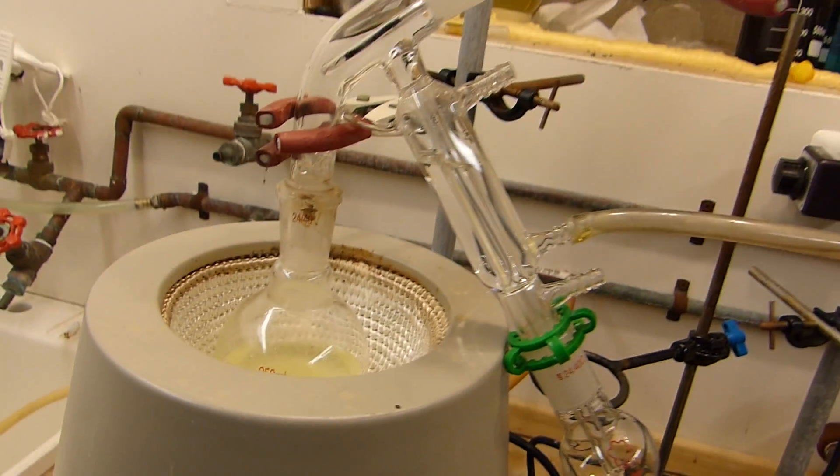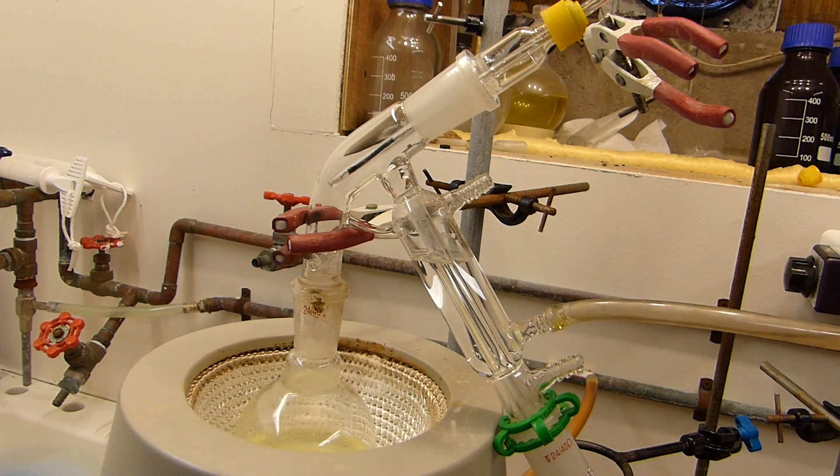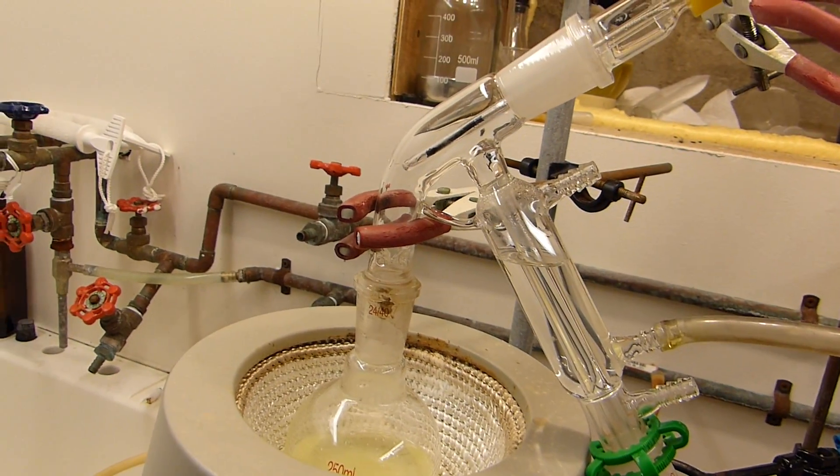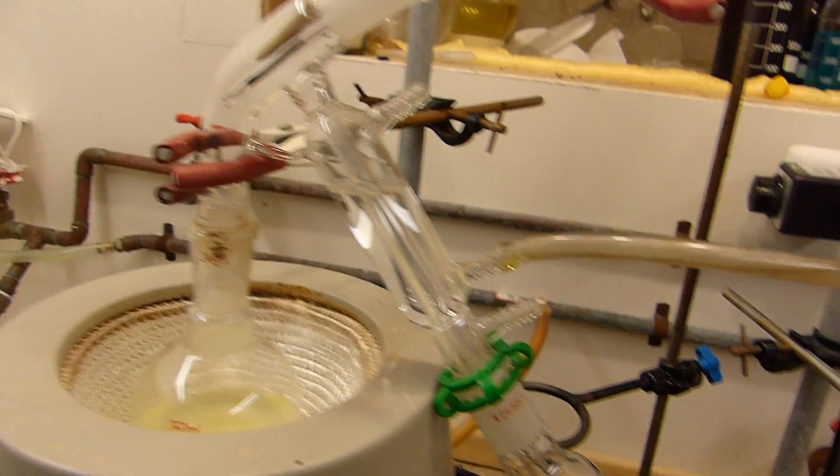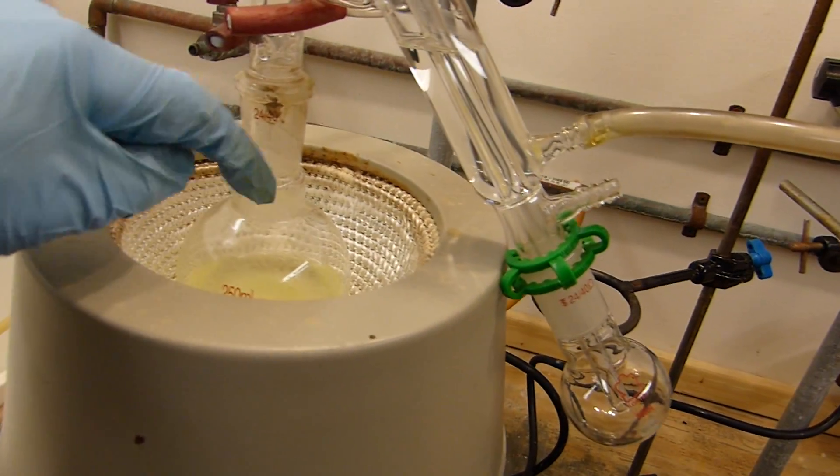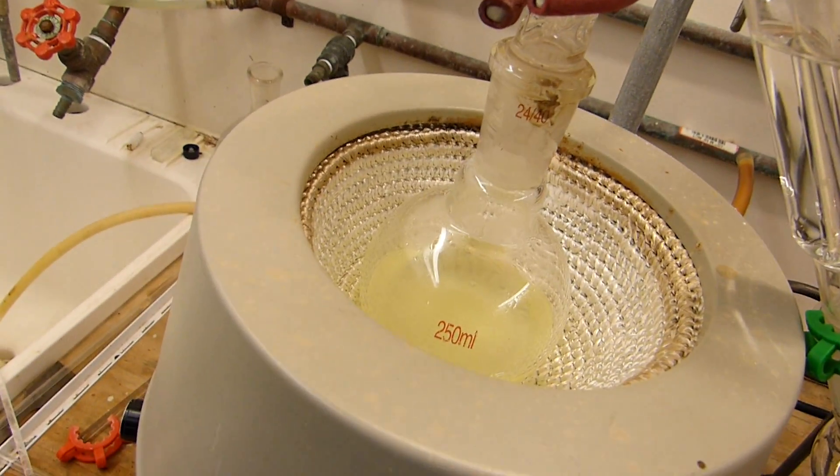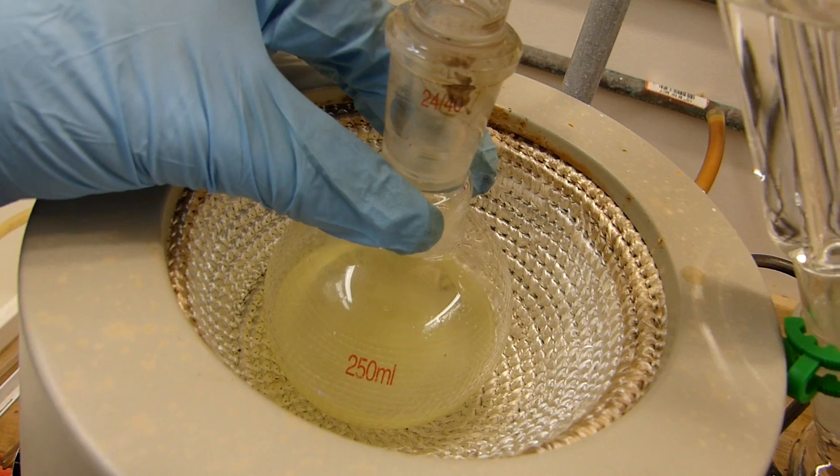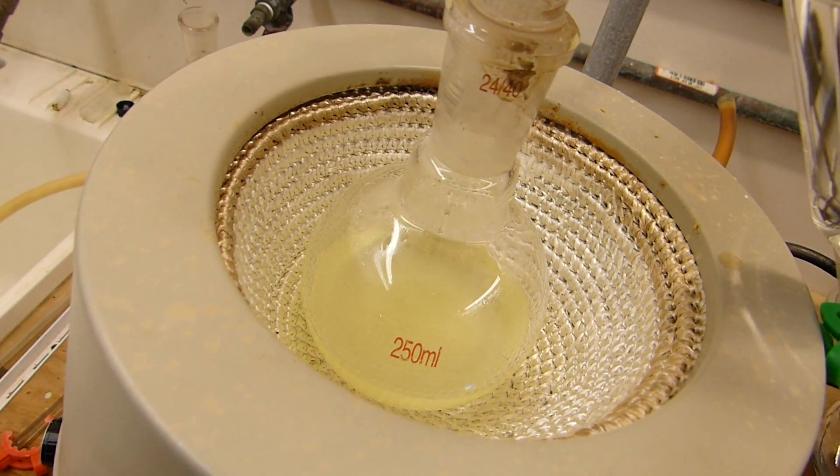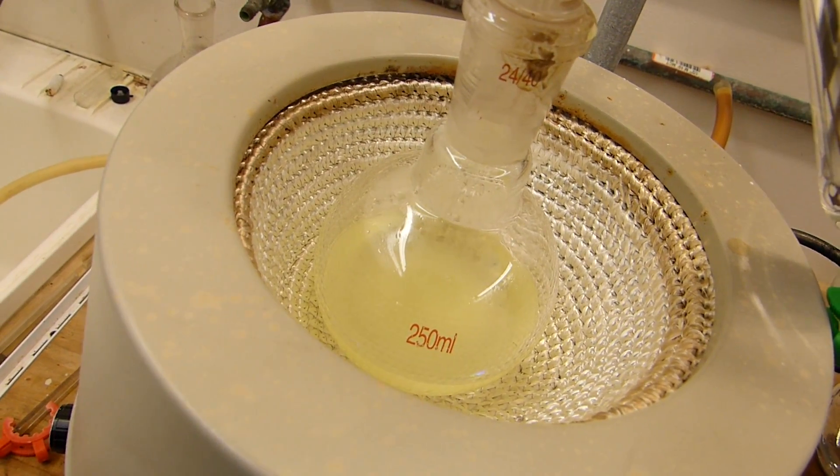Alright, so I'm all set up for distillation. Same exact setup. I just rinsed this still head out with acetone, dried it all off and everything, and then replaced the receiver that was over here with the boiling flask that was in there. And you can see the phenol is happily sitting in there with some salicylic acid and some other products, and I'm just going to begin to heat that.